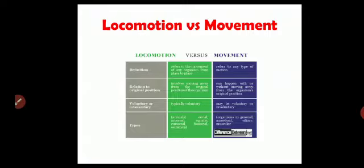In movement, it may be voluntary as well as involuntary. The types in locomotion you could see in animals - aerial animals, aquatic animals - they have to move themselves. Birds have to fly, fishes have to swim. Whereas in movement, your amoeboid, ciliary, muscular organisms just slither and move. They don't actually have any organs to move from one place to another.